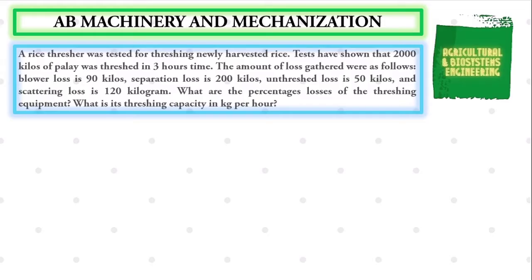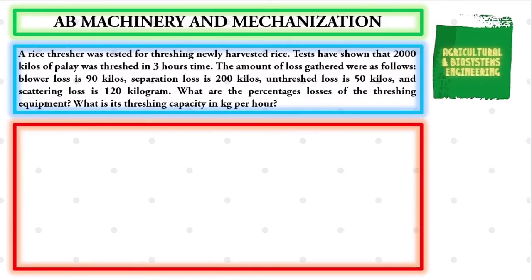To continue, we first identify our given. We have the clean threshed grain, symbolized by CT, to be 2000 kilograms.